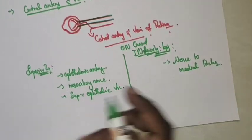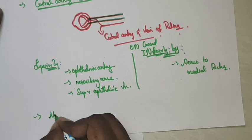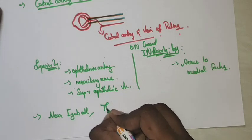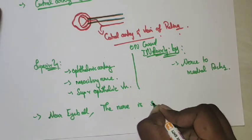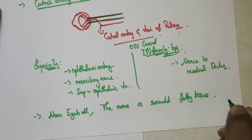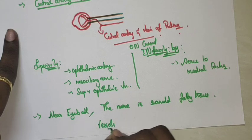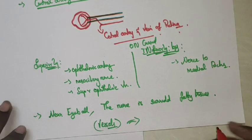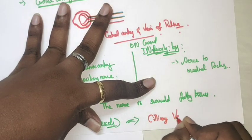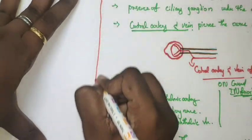The final relation is very important: near the eyeball, the nerve is surrounded by fatty tissues — a fatty layer which contains vessels. These vessels are named ciliary vessels, and they act as the blood supply of the optic nerve.